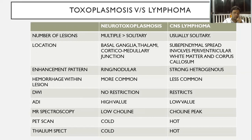Distinguishing neurotoxoplasmosis from CNS lymphoma on imaging: neurotoxoplasmosis typically shows multiple lesions, whereas CNS lymphoma is usually solitary. Location in neurotoxoplasmosis includes basal ganglia, thalami, corticomedullary junction, and rarely the posterior fossa, whereas CNS lymphoma shows subependymal spread including periventricular white matter and corpus callosum. Enhancement pattern is ring and nodular in neurotoxoplasmosis, whereas there is strong heterogeneous enhancement in CNS lymphoma. Neurotoxoplasmosis lesions do not restrict on DWI, whereas CNS lymphoma restricts. Vasogenic edema is more common in neurotoxoplasmosis. ADC shows high value in neurotoxoplasmosis and low value in CNS lymphoma. MR spectroscopy shows a choline peak in CNS lymphoma but not in neurotoxoplasmosis, whereas PET scan and thallium SPECT will be cold for neurotoxoplasmosis and hot for CNS lymphoma.